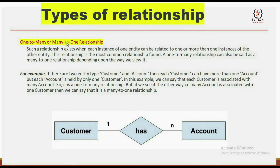One-to-many or many-to-one relationship: such a relationship exists where each instance of one entity can be related to one or more than one instances of the other entity. This relationship is the most common relationship form. A one-to-many relationship can also be called a many-to-one relationship depending upon the way we view it.